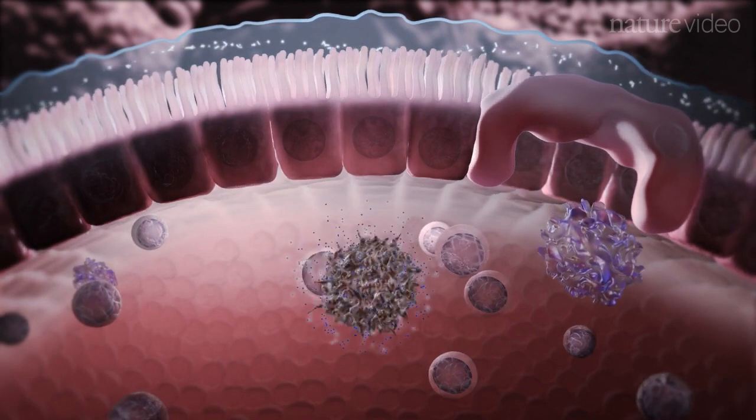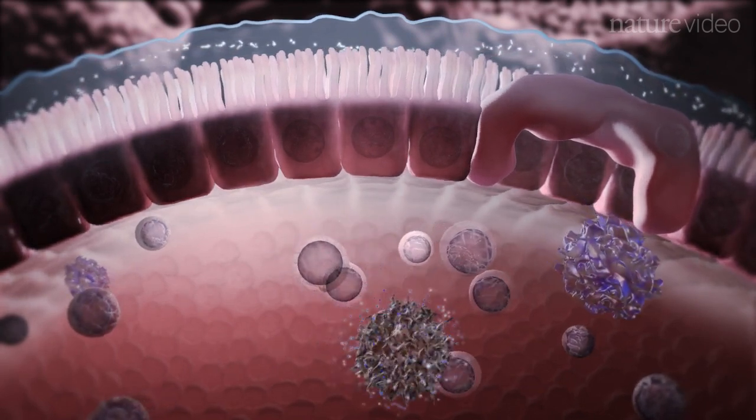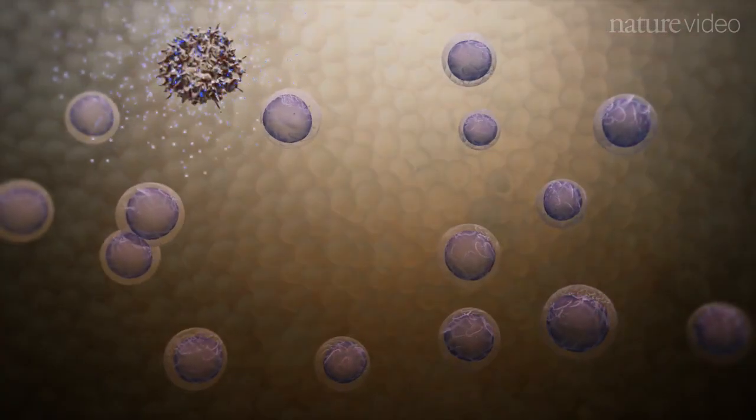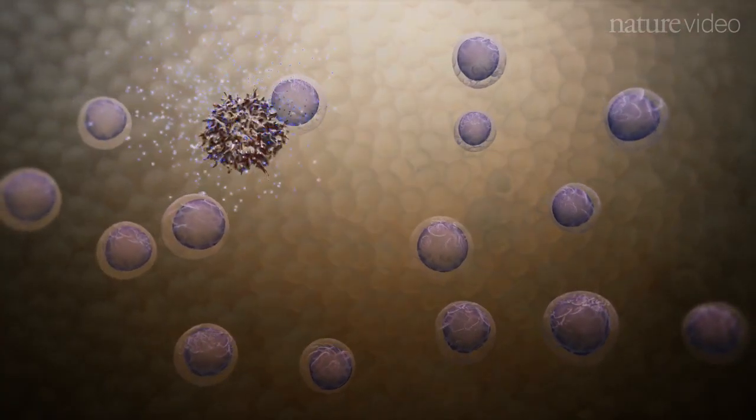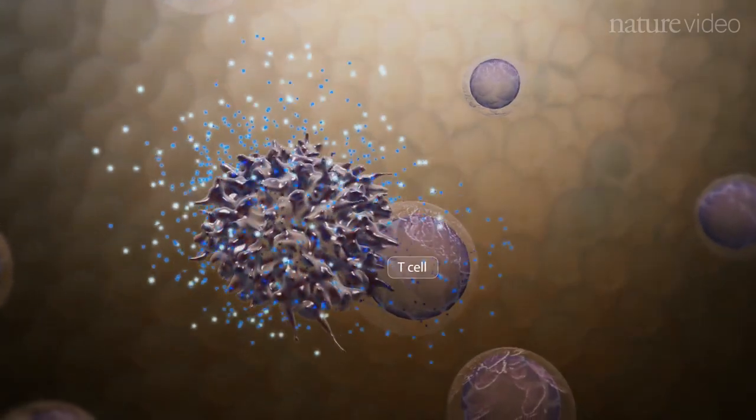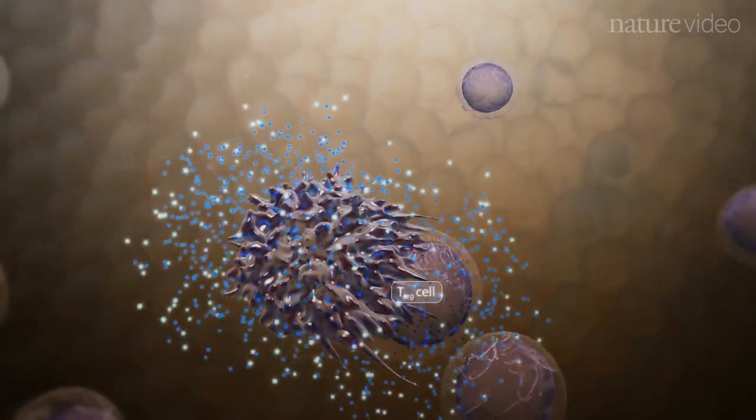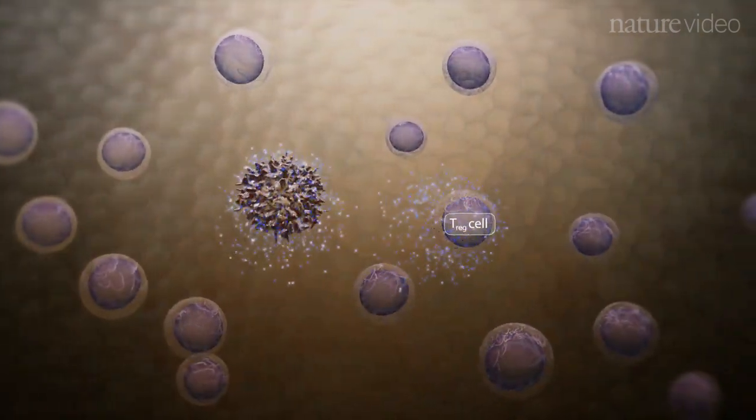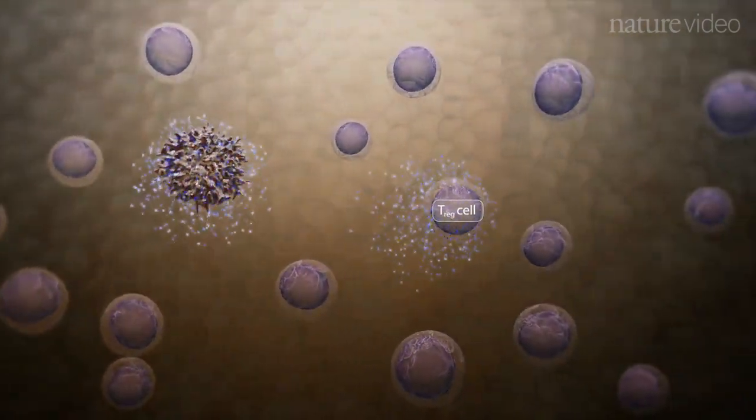With their cargo of antigen, these dendritic cells then traffic to the T-cell zones of the Peyer's patch. Upon encounter with specific T-cells, the dendritic cells convert them into an immunomodulatory cell called a regulatory T-cell or Treg. Defects in the function of these cells are associated with inflammatory bowel disease in both animals and humans.